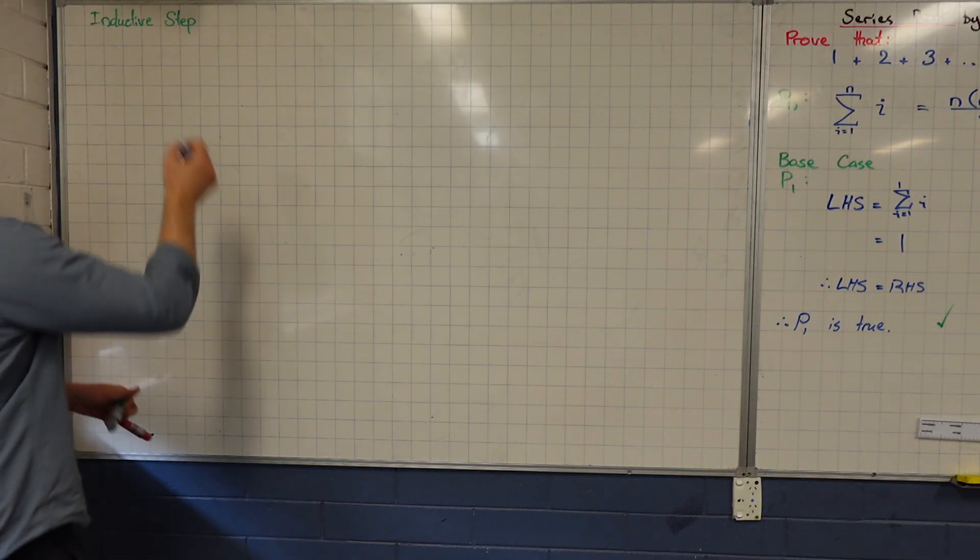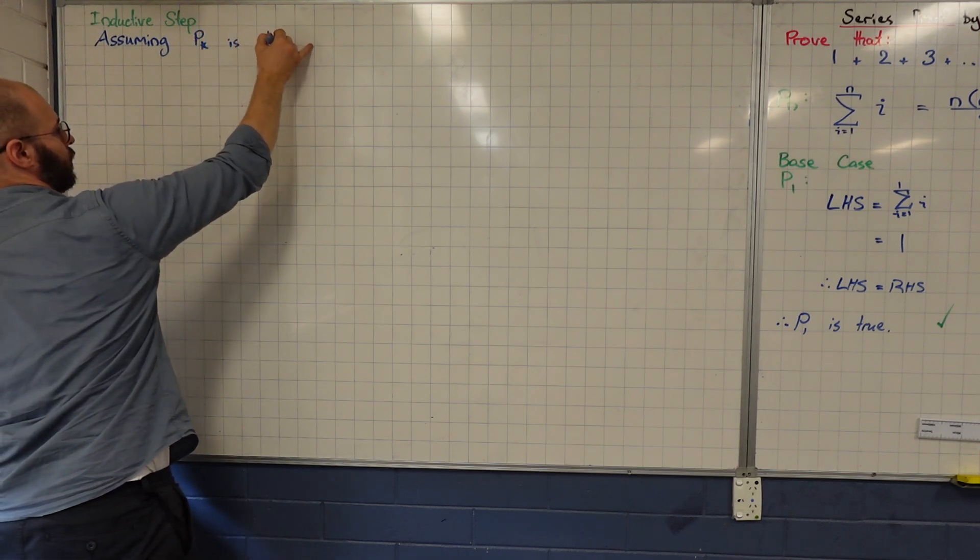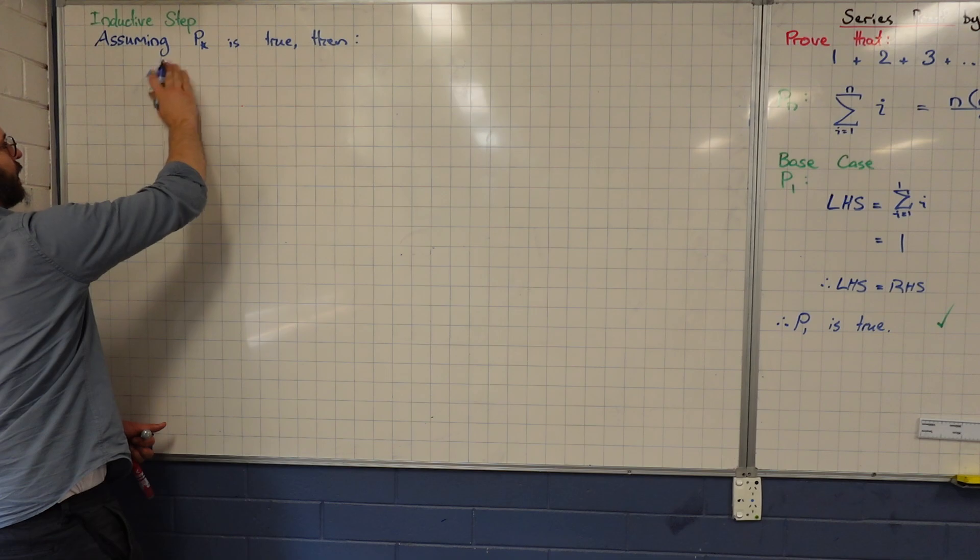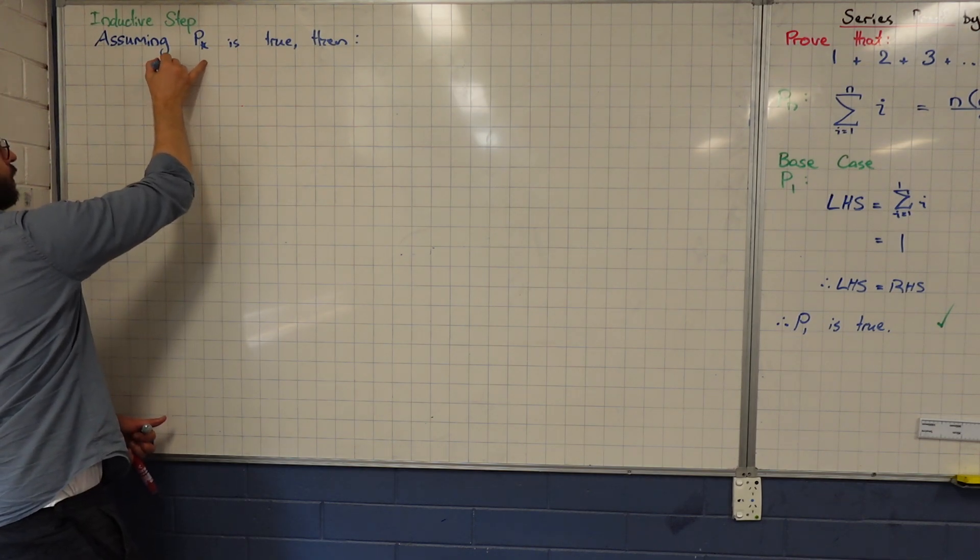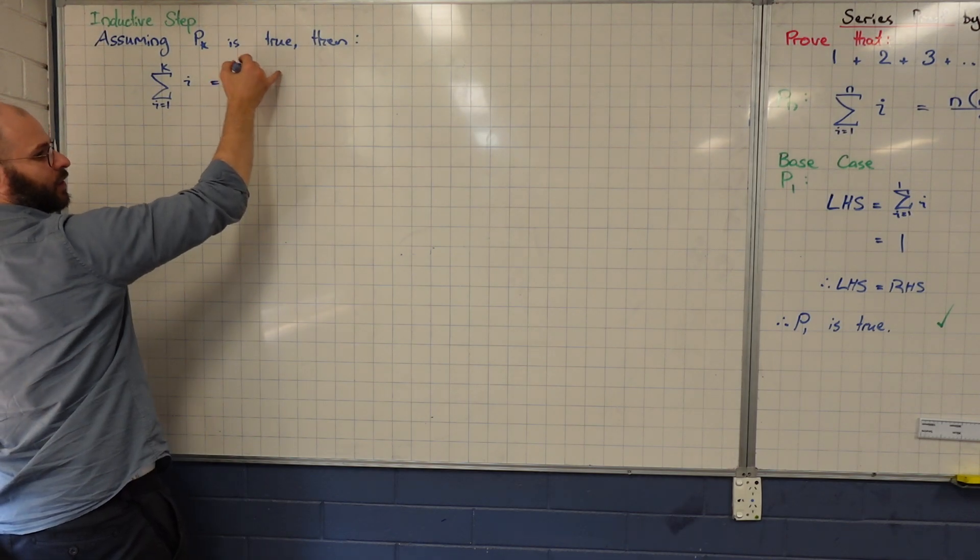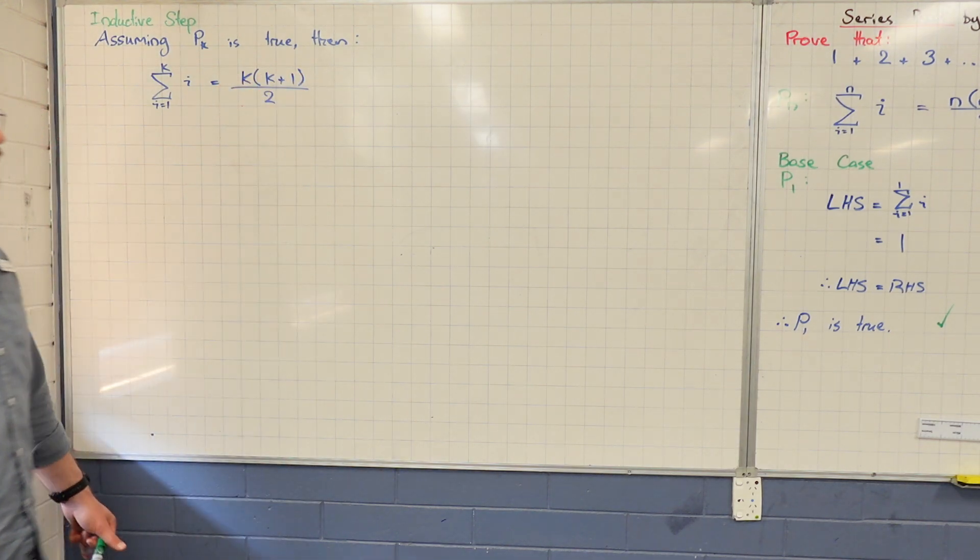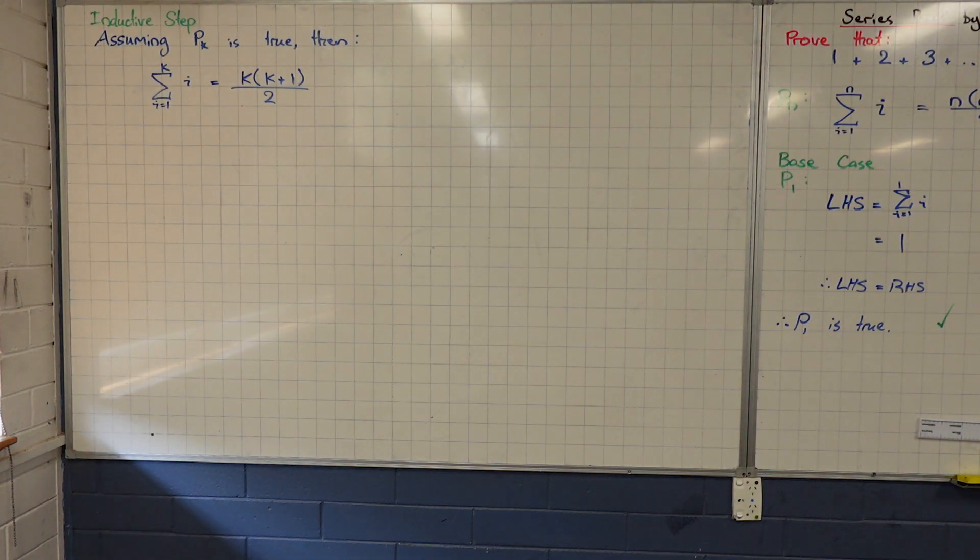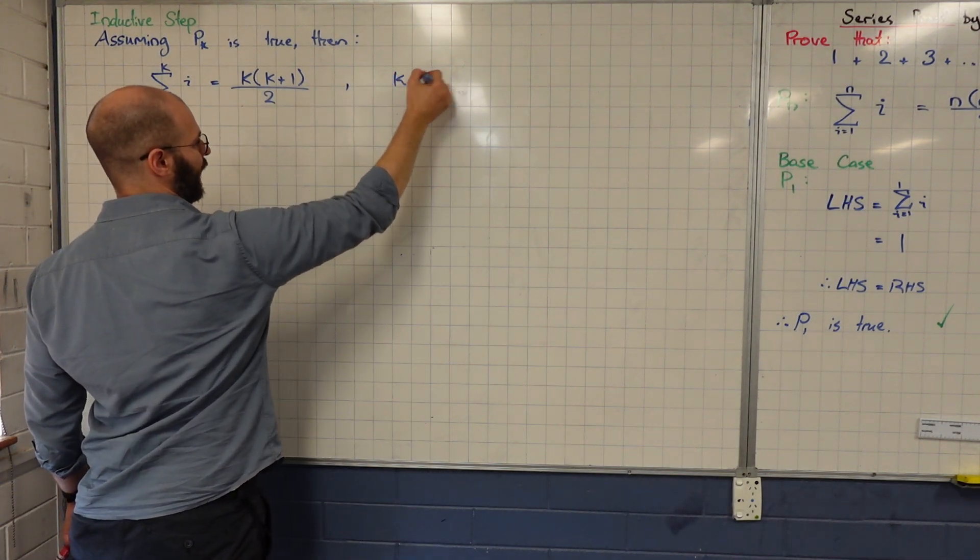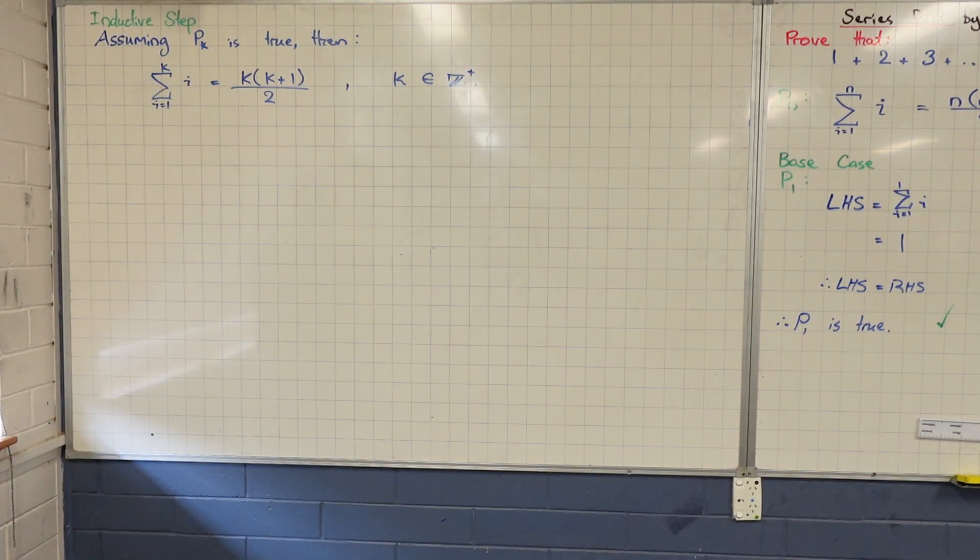What's our assumption going to be? Assuming P of k is true. Then, if P of k is true, then of course, oh, I did a bad job there. Every time we see n, we change it to a k. Be careful not to change that to a k. I used to do it all the time because I'm a silly sausage sometimes. Is that cool? Now, what have I forgotten to do? What do I need to define? k. Conditions for k, where k is a member of the positive integers. If you don't define it, you lose a mark on notation.